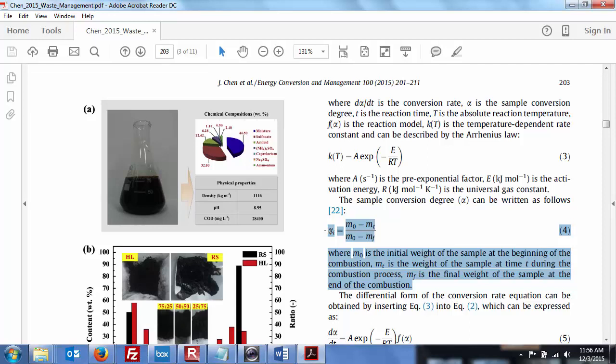So, a sample conversion degree, alpha, and it's just a ratio. It's like an efficiency, right? If you remember eta from NRGY 101 and 102, it's the ratio of two masses. So, M-naught is the initial weight of the sample at the beginning of the combustion. That's what's going in. M-t is the weight of the sample at time t during the combustion process. So, it's decreasing. As combustion increases, you're losing mass at time t. M-f is the final weight of the sample at the end of combustion.